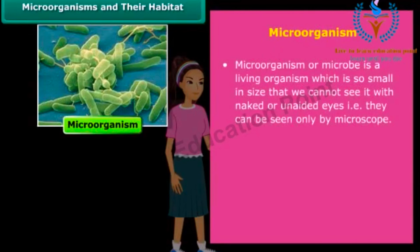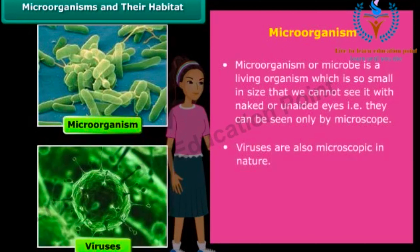A microorganism, or microbe, is so small in size that we cannot see it with naked or unaided eyes. They are broadly classified into four major groups: bacteria, fungi, protozoa, and algae. Viruses are also microscopic.